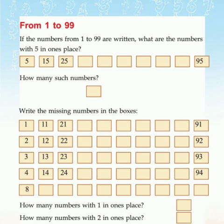You can see some questions at the last row. That is: how many numbers have 1 in the 1's place? Count those and write in the column. The next question is: how many numbers have 2 in the 1's place?